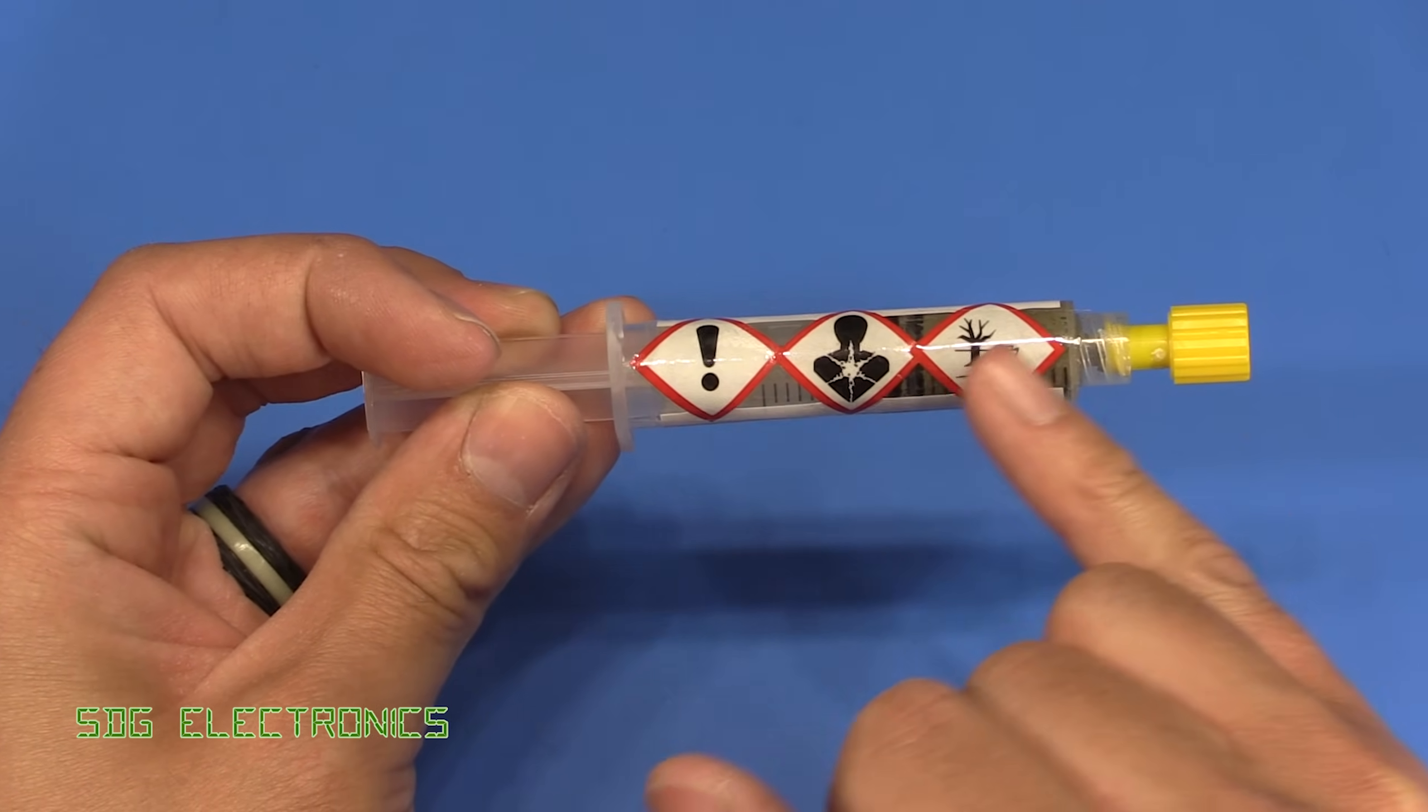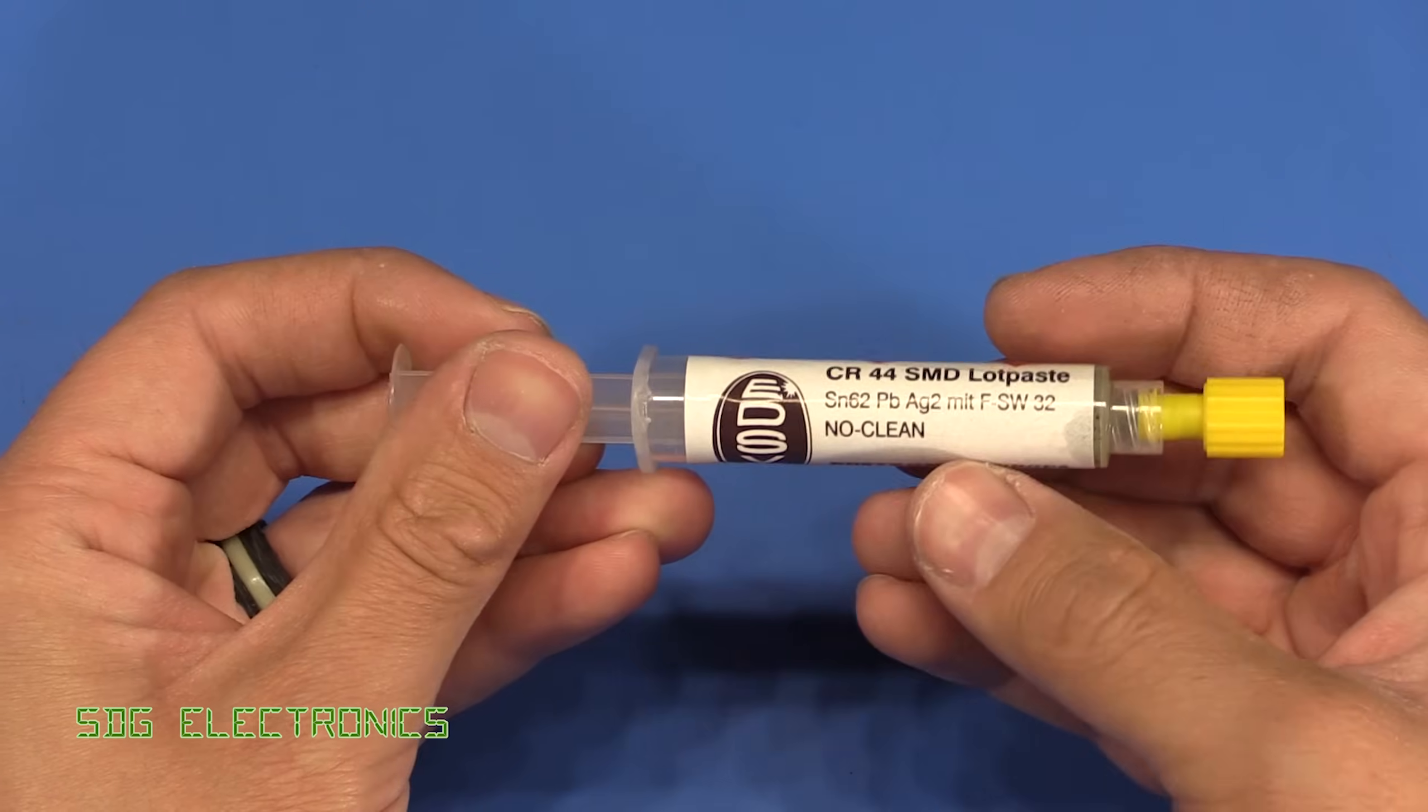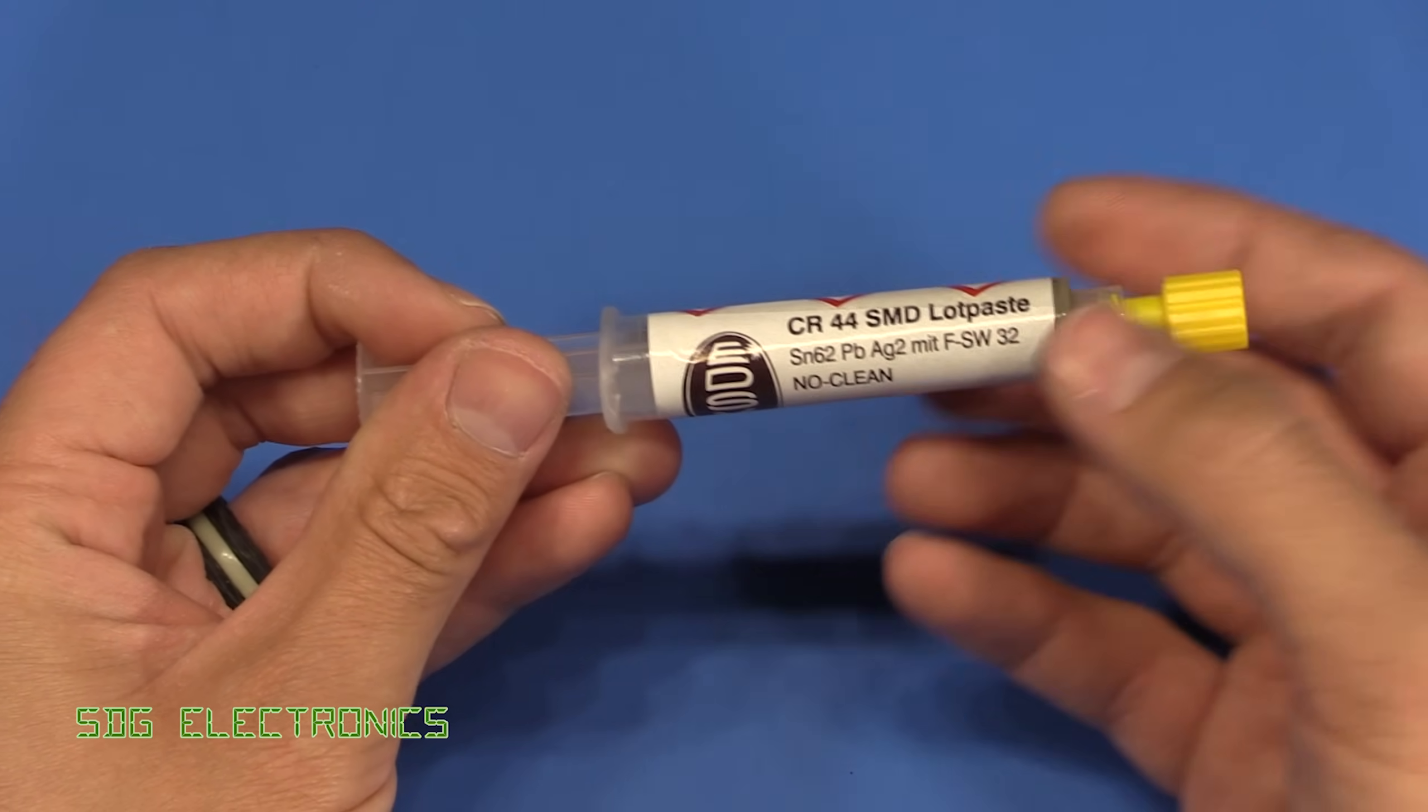The actual solder component of the paste—in this case, the tin and lead—is very stable.